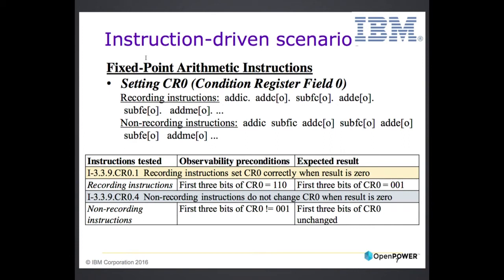First, instruction: what you see here is a description of the behavior we are trying to cover. The behavior is getting a result of zero, and as a result we should set a certain condition register. Next we have which instructions are the recording instructions — the ones which are actually doing that — those are the ones we need to check. The non-recording instructions are the ones which come in for misinterpretation; they should not do it, but we need to check it as well. And in the table, what we see is what expected results we are looking for, and also the observability condition or precondition — what should be the state before the test so we make sure we see the result. If a certain result puts zero in a register, you don't want to start the test with zero. Some cases are much more complex, like atomicity, where defining the precondition is far from trivial.